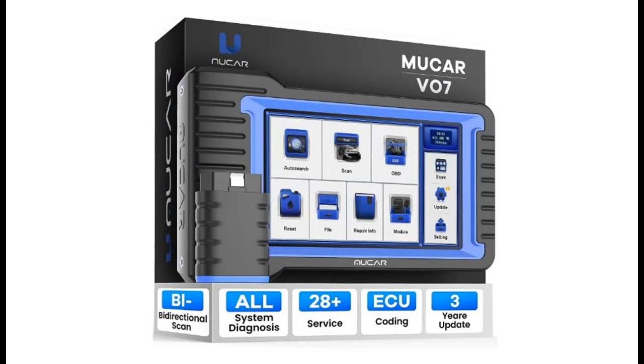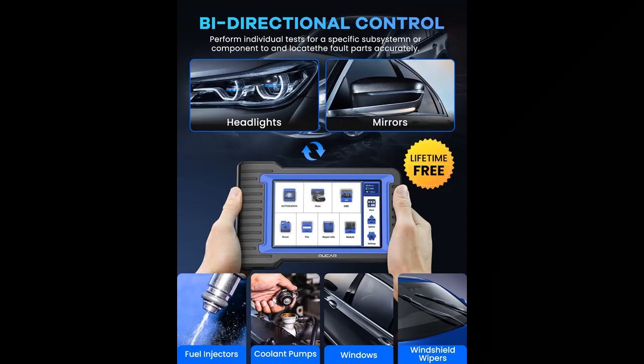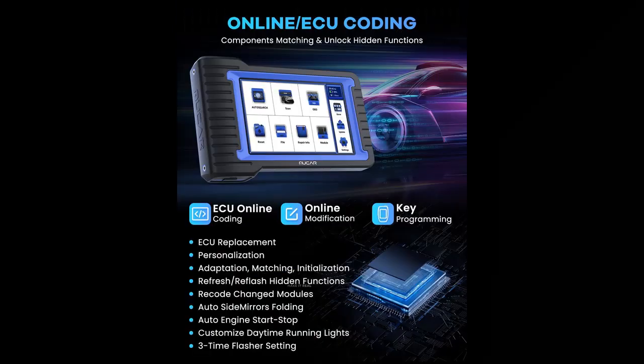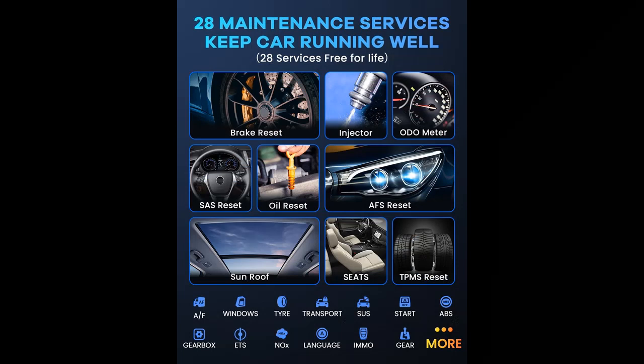Lifetime Free OE Level Diagnosis for All Vehicle Systems: the Mucar V07 OBD2 Scanner can perform OE-level diagnosis of all systems including engine, transmission, airbag, ABS, ESP, TPMS, immobilizer, gateway, steering, radio, and air conditioning. This diagnostic scanner supports essential functions such as reading ECU version info and reading data streams.